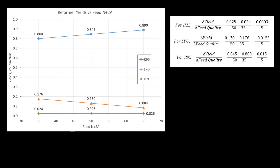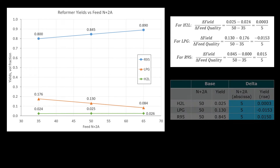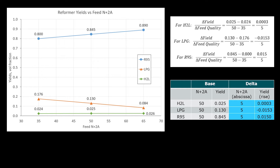So if N plus 2A value increases by 5, the yield fractions will change by the following amounts. Notice that LPG has a negative yield, meaning that it's actually going to decrease as the N plus 2A increases.